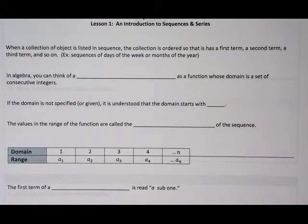So when a collection of objects is listed in a sequence, the collection is ordered so that it has a first term, a second term, a third term, and so on. A sequence that we deal with on a daily basis or a weekly basis is sequences of days of the week or months of the year. We have starting with Monday, Tuesday, Wednesday, Thursday, and so on and so forth.